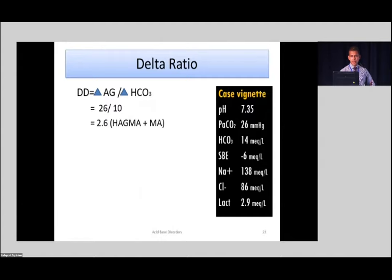In this particular case, we get a delta ratio of 2.6. That tells us there is a mixed acidosis in addition to the high anion gap — there is a metabolic alkalosis also. So how do you explain this? You need to interpret the blood gas, then find the etiology. Step one: identify the dominant acid-base disorder, whether metabolic or respiratory. Step two: calculate the anion gap. Then look at the delta ratio to see whether there is mixed acidosis, and check whether compensation is adequate.